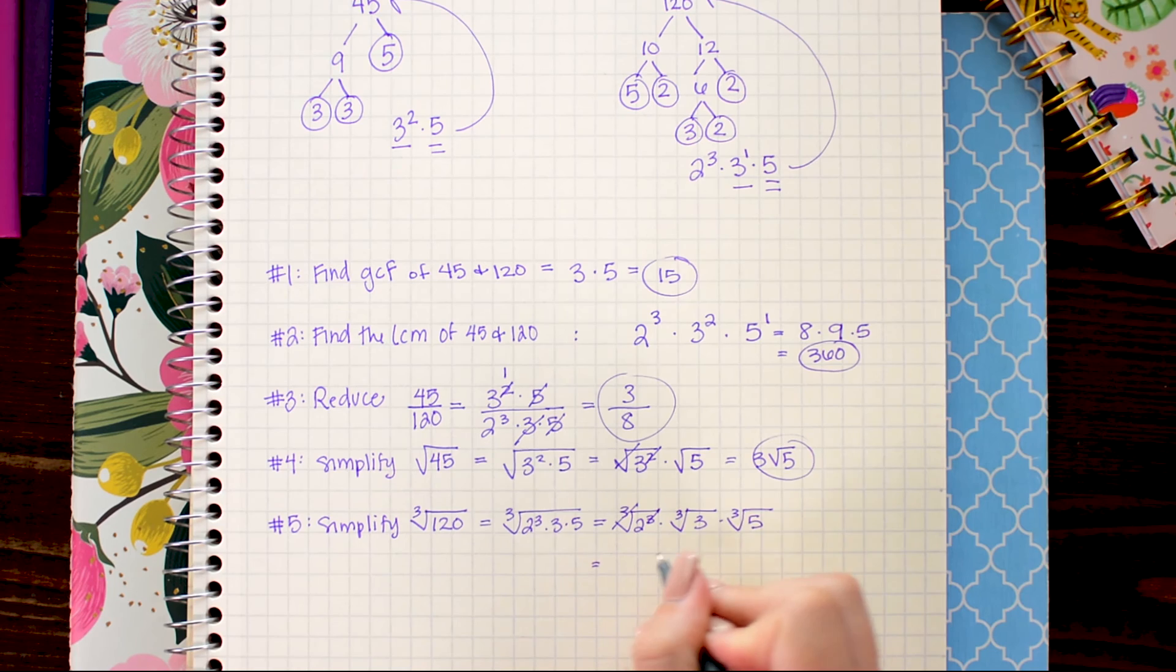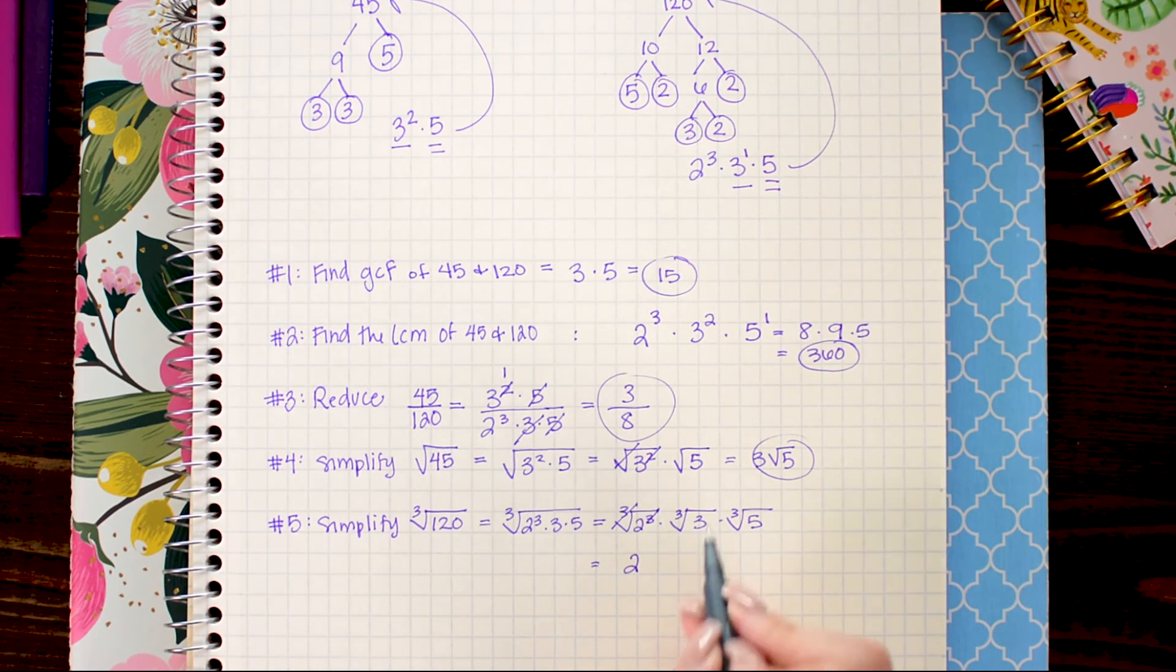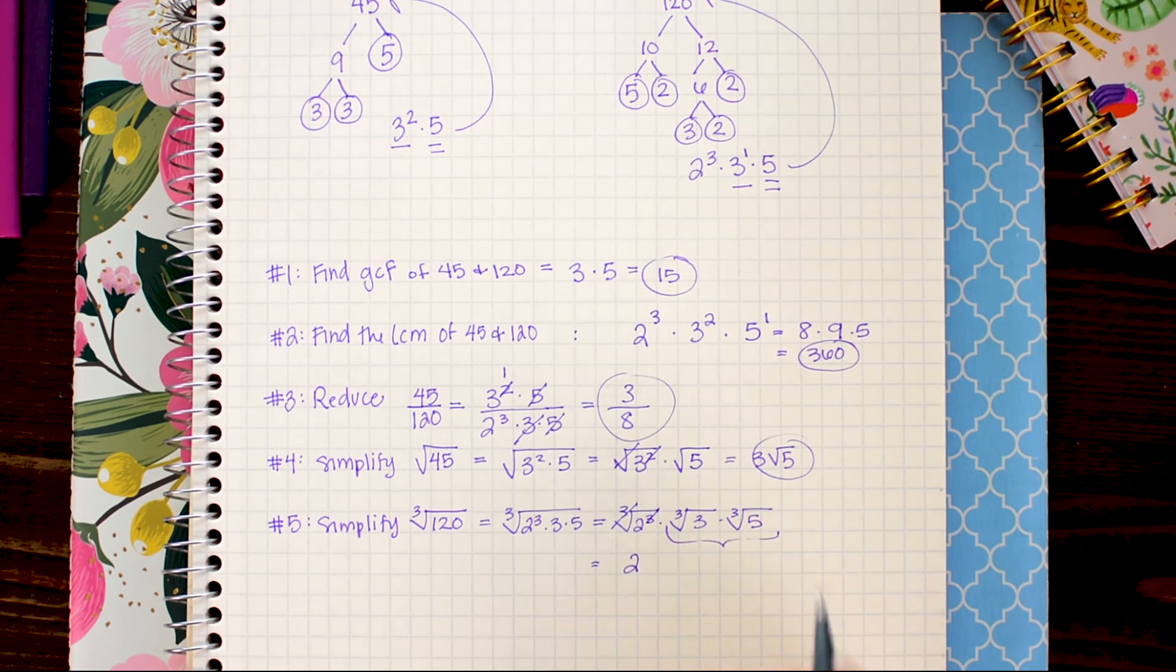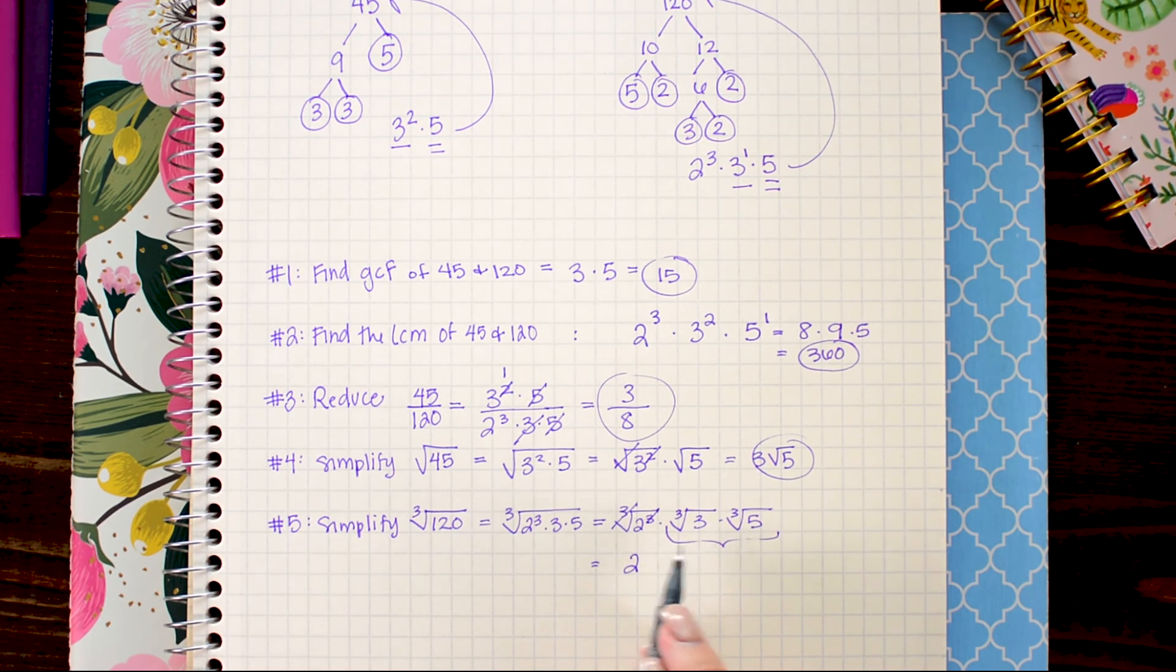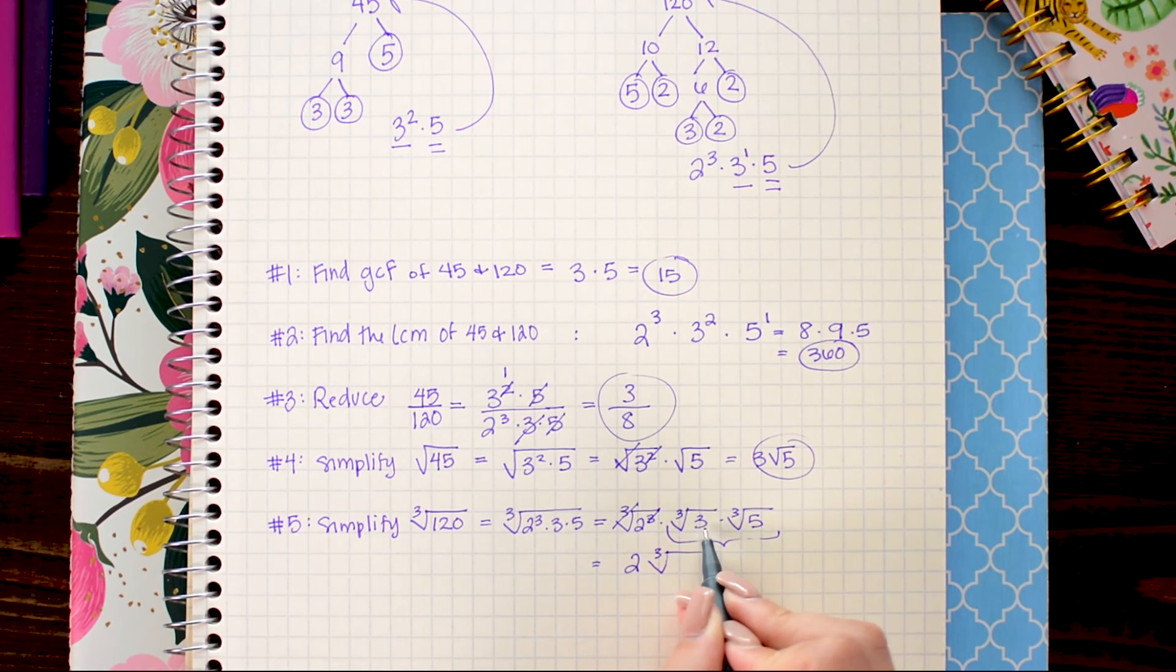So I simply get 2 here. And these radicals I can't reduce so I'm just going to put them back together into one radical because there's no sense in having two separate ones. So that's just going to be the cube root of 3 times 5 which is 15.